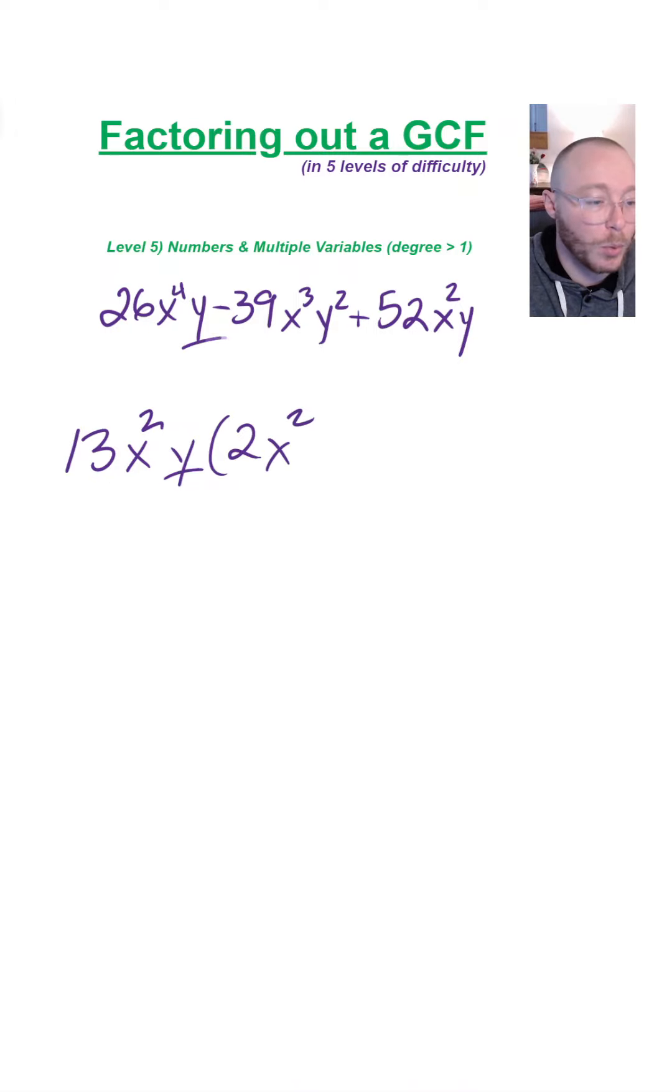Then you've got y divided by y canceling. Then we've got negative 39 divided by 13. This would be negative 3. x to the third divided by x squared, I get x to the first. y squared divided by y to the first, you'll get y to the first.